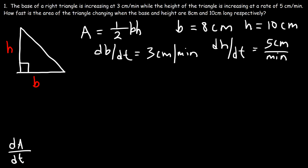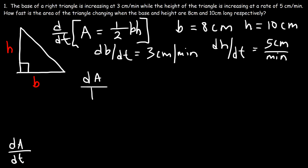Basically, what is dA/dt — what's the value that corresponds to it? What we need to do is differentiate this equation with respect to time. The derivative of A is dA/dt. Now how can we differentiate one-half base times height? The base and the height are changing — they don't have a fixed length, so they're variables, not constants. Therefore we need to use the product rule.